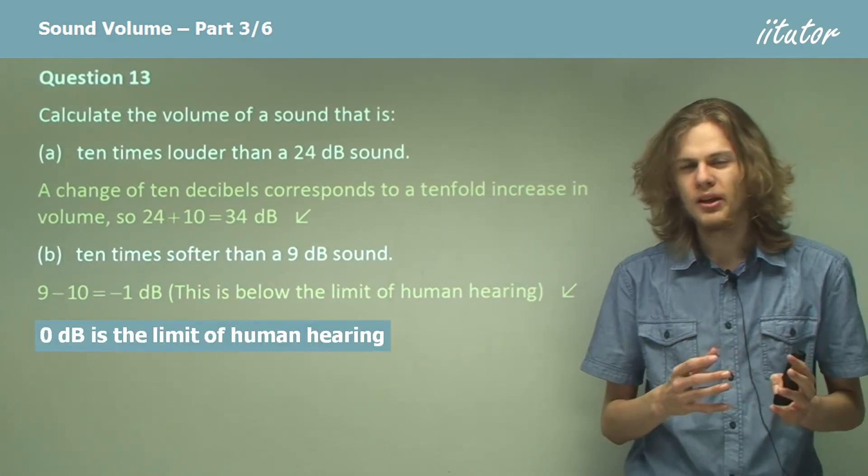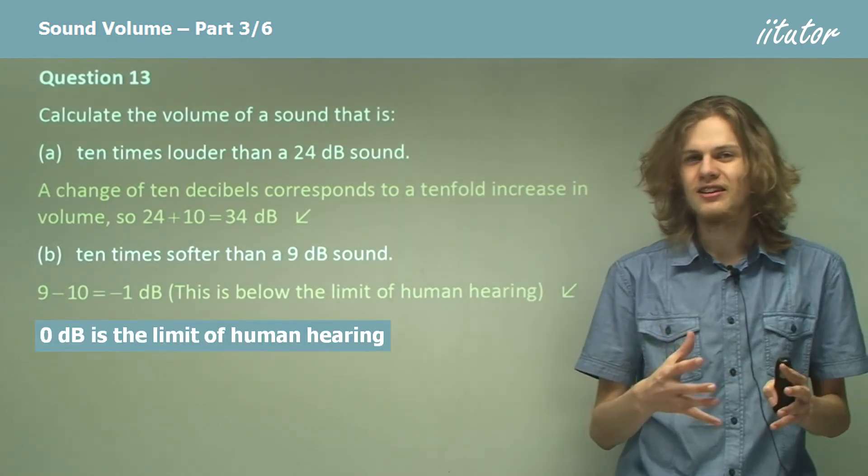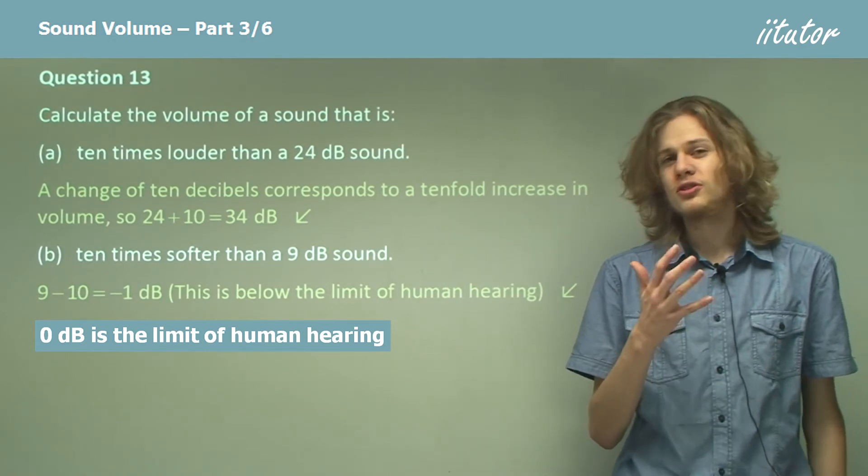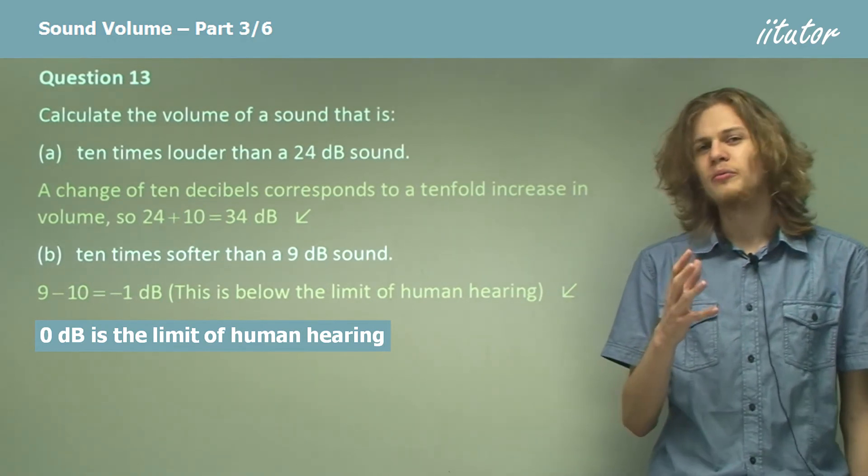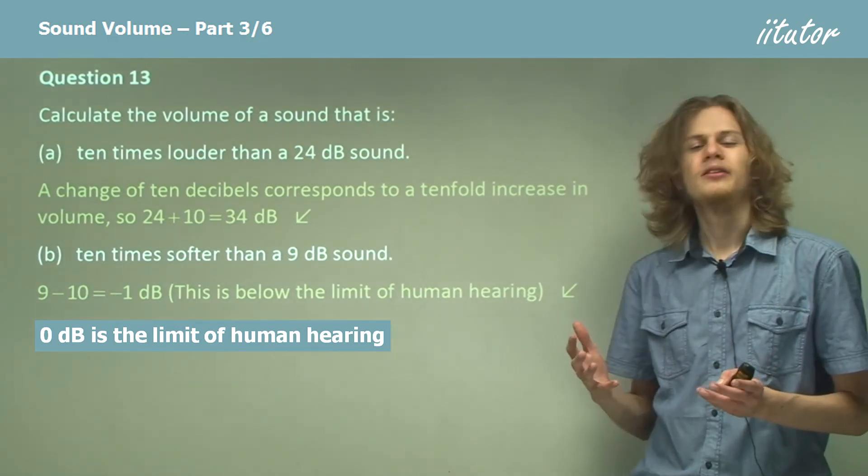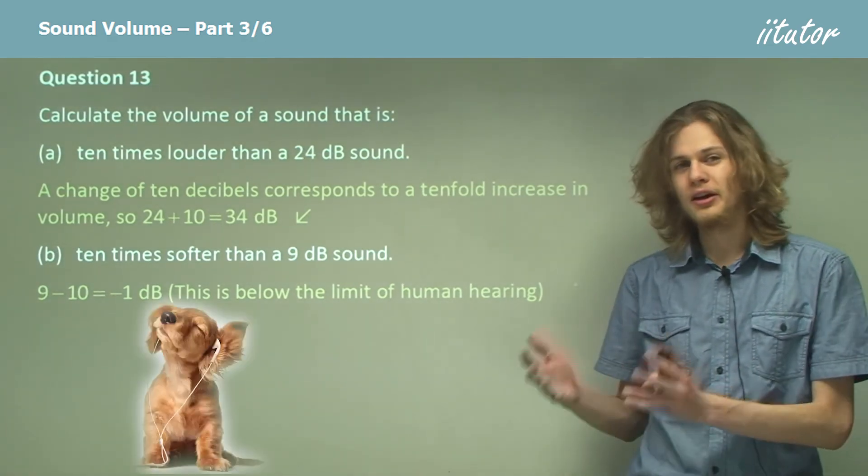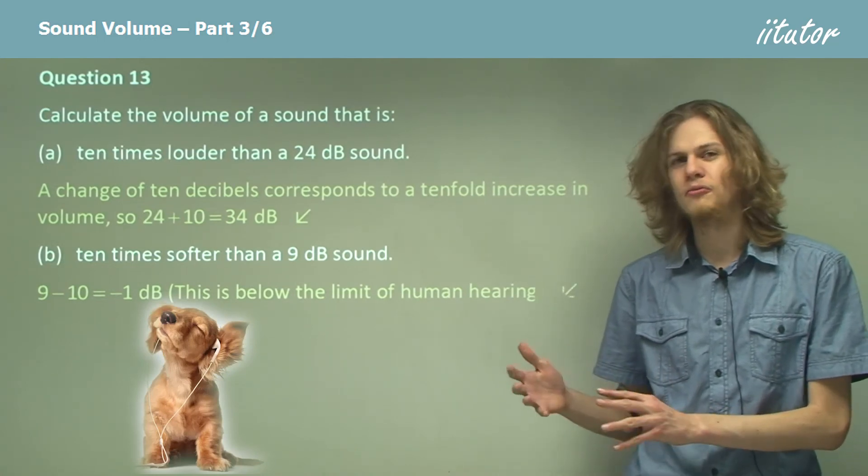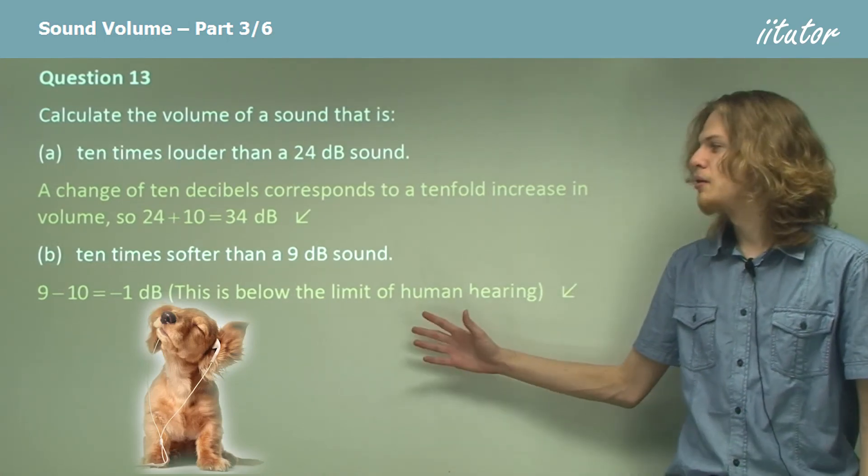But remember this is okay, negative numbers are fine. Zero decibels is simply defined by the limit of human hearing. If something is less than zero decibels, then humans can't hear it, but that doesn't mean that it doesn't exist. If, for example, we had more sensitive ears or if we had a pet that could pick up on something of that volume, then they may be able to hear it.